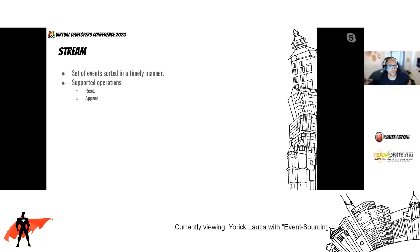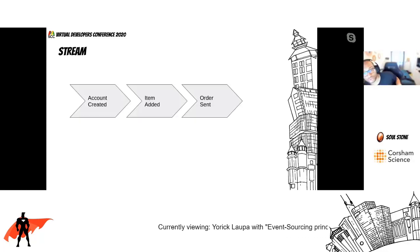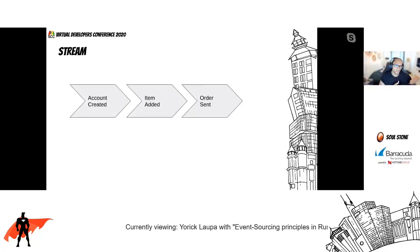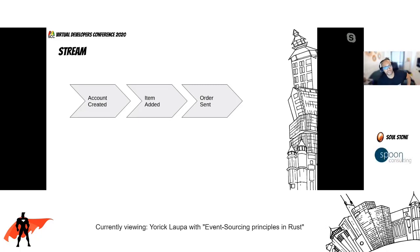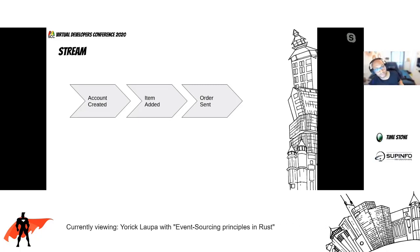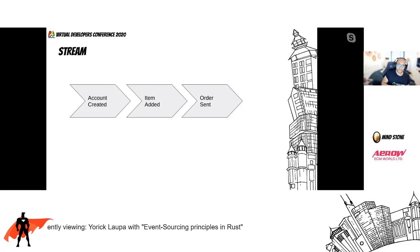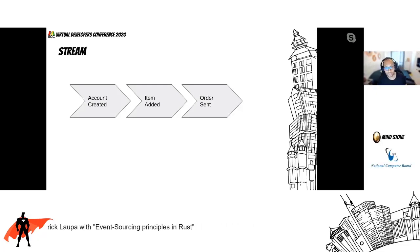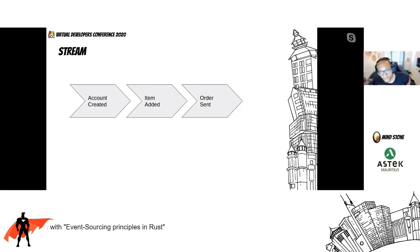Like events, streams don't require a specific template. However, I think we can come with at least one property, and that property should be able to globally identify the stream. For simplicity's sake, I propose to call that property a stream name or a stream ID. We usually tend to have a semi-human-readable stream name, for example 'account' dash followed by some random UUID. Here's an example of what a stream would look like: account created, item added, and order sent.